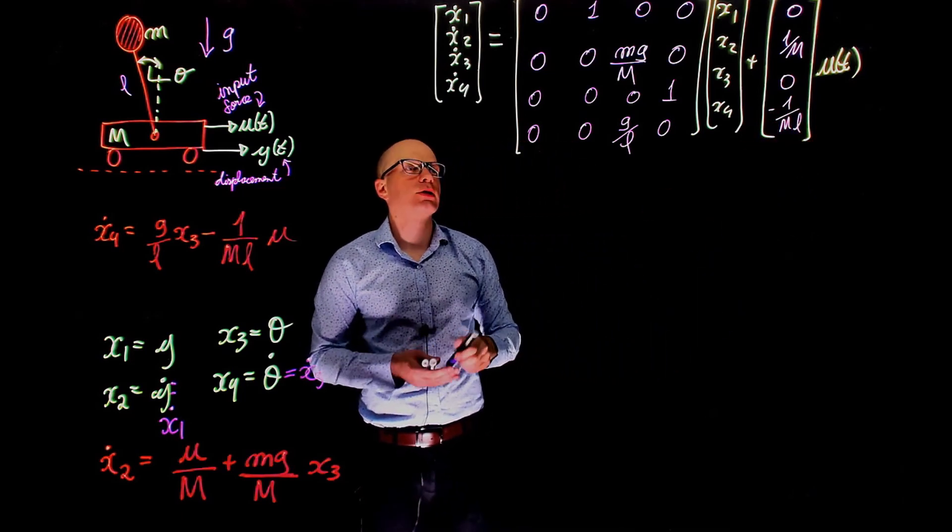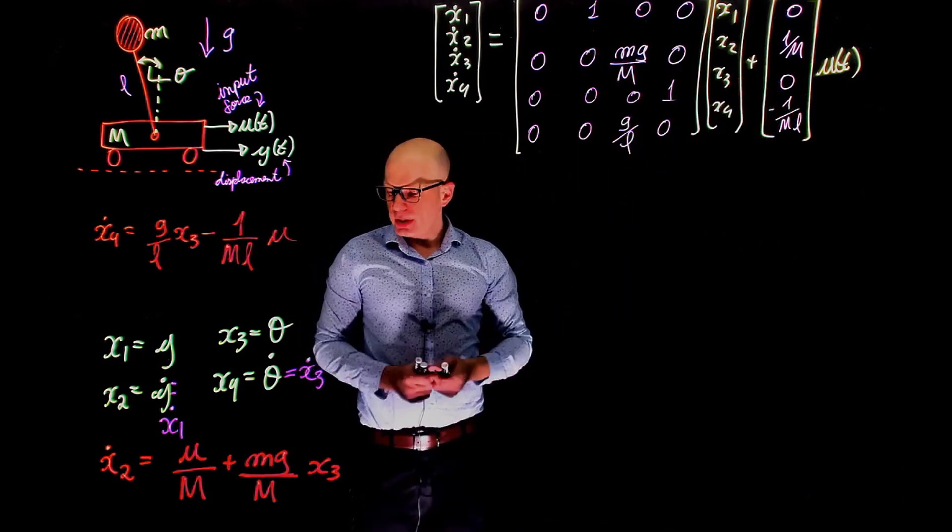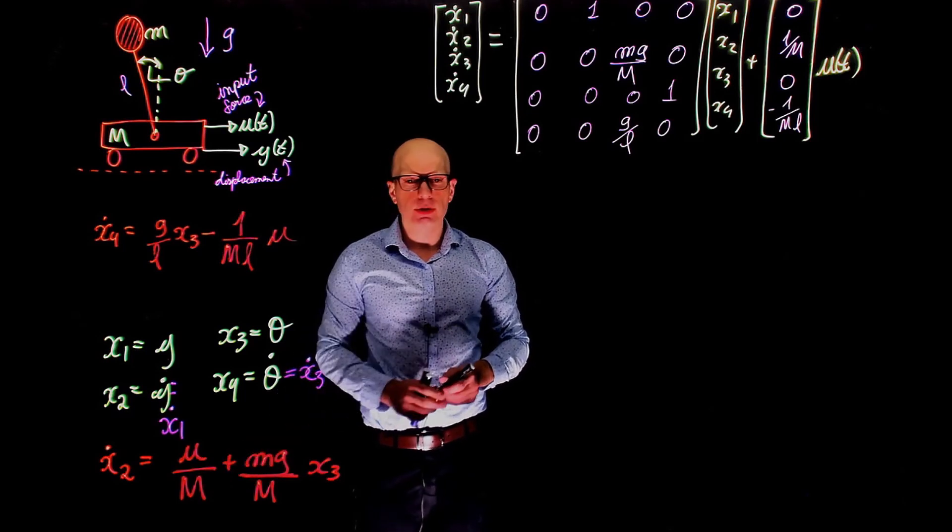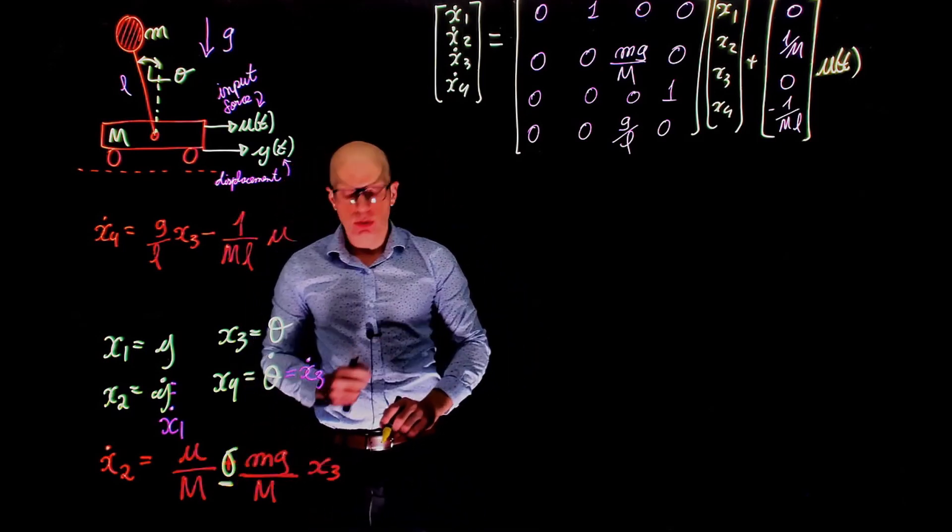Now this is the first equation, this is matrix A, this is vector B. And now I just realized that when I copied the expression for x2 dot here, this should have been a negative sign not positive, which makes this element negative. It's all good now.